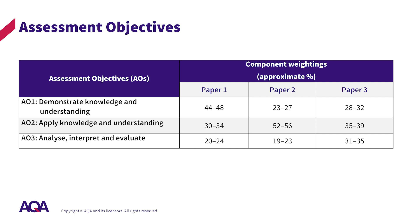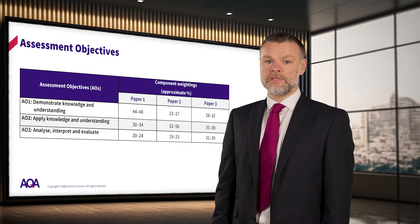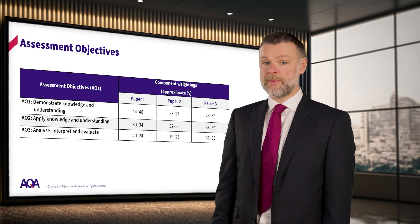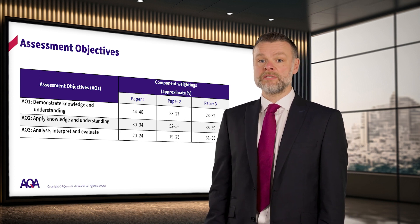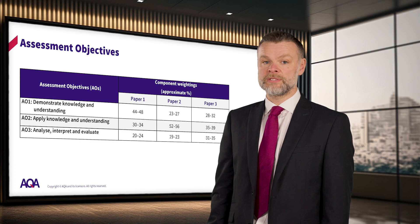This table shows the approximate weightings on each paper of the assessment objectives. You will be able to see that these weightings are not equal on each paper, and this is something you may wish to consider if you are designing your own assessments for end of unit tests or mock examinations by combining different questions from different papers. To make your assessments fair and representative of actual papers, the balance of assessment objectives should fall within these ranges.